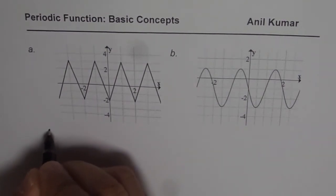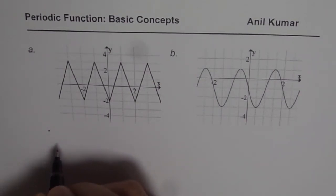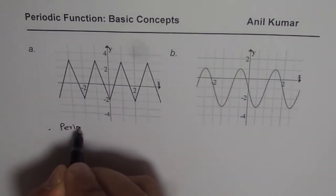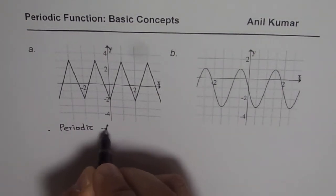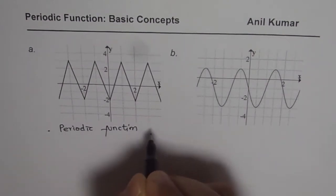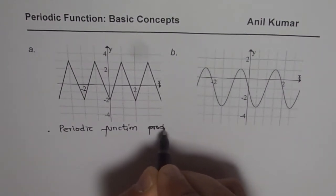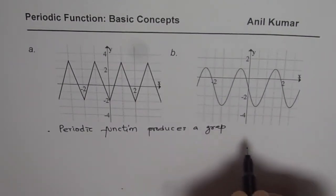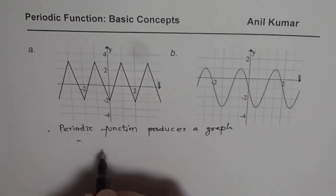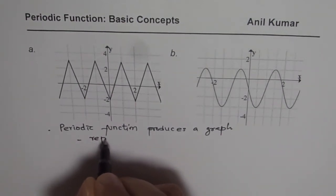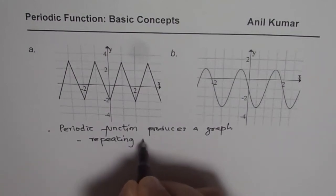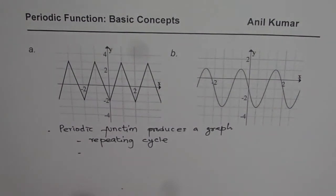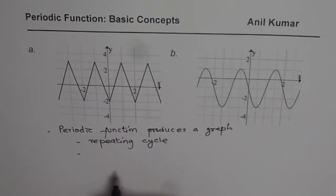Now one definition could be that a periodic function always produces a graph. So we can say periodic function produces a graph that has two characteristics. The first characteristic is it is repeating. It has a repeating cycle.